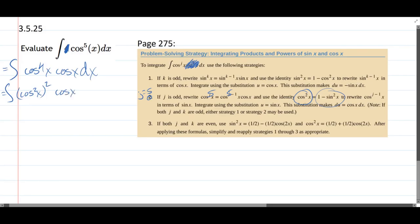So we take a power to a power, you multiply. And now cos squared is one minus sine squared.